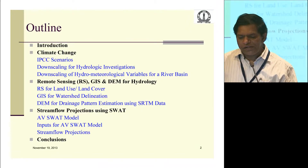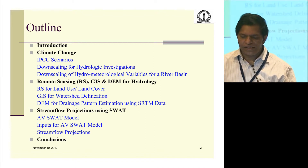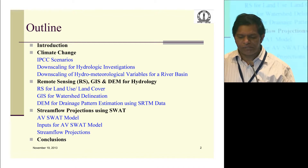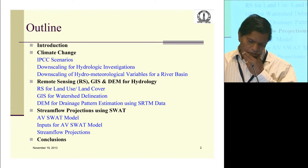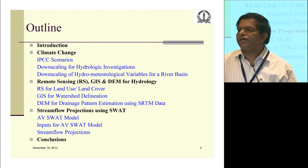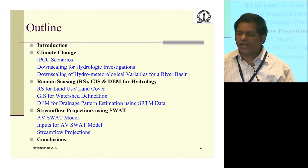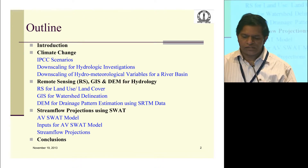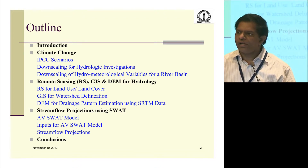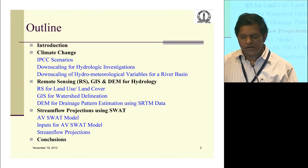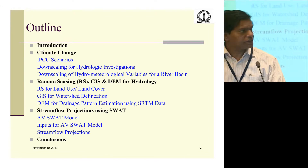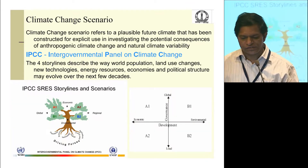I'll be basically focusing on one particular case study where we try to look at climate change impact in terms of all the variables that will influence the hydrology of a river basin, and then try to use them in a conceptual hydrologic model and see how the stream flow projections are made into the future for various predicted climate change scenarios.